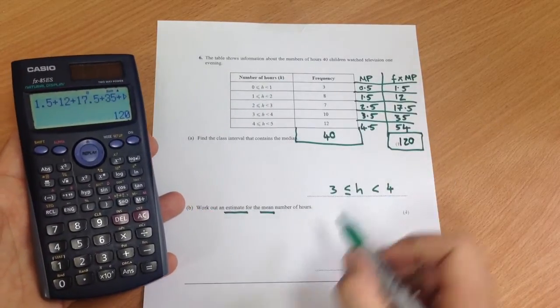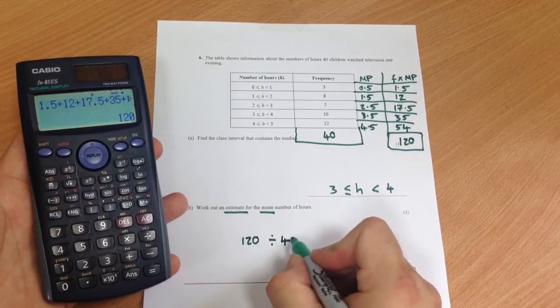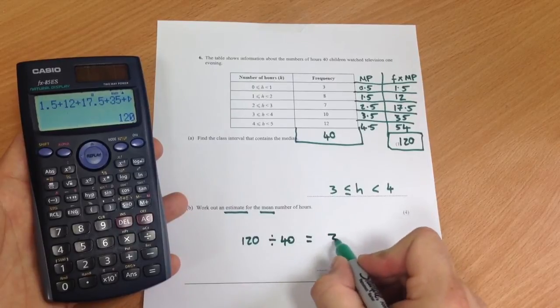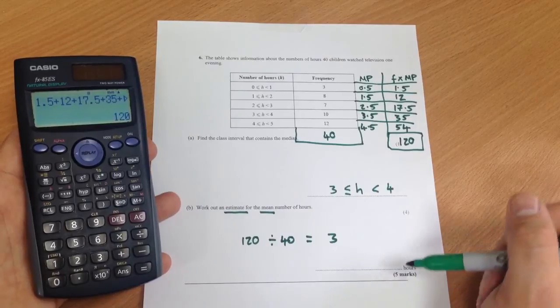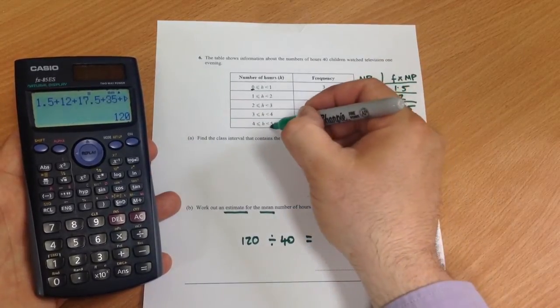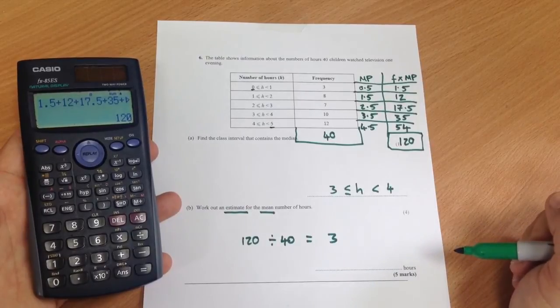And now your estimate of the mean, you divide that number by that number. So 120 divided by 40 which gives you the answer 3. And a quick way to check whether that's a reasonable estimate or not is to see is it between 0 and 5. Yes it is! So we can be fairly confident that's the right answer. Thank you.